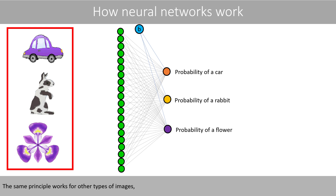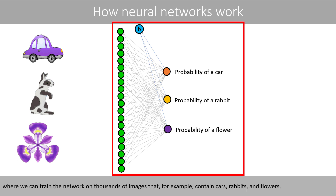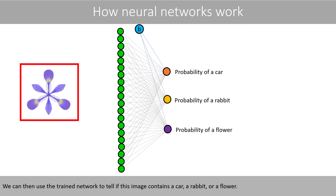The same principle works also for other types of images, where we can train the network on thousands of images that, for example, contain cars, rabbits, and flowers. We can then use the trained network to tell if a new image contains a car, a rabbit, or a flower.